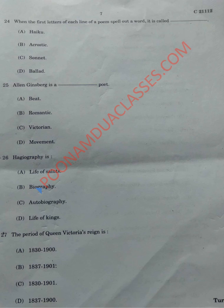Question number 26 asks: what is hagiography? Hagiography is the life of saintly people — Option A is the right answer. A hagiography is a biography of a saint or a religious leader, and by extension an idealized biography of a founder, saint, monk, nun, or any iconic figure in the religious world.